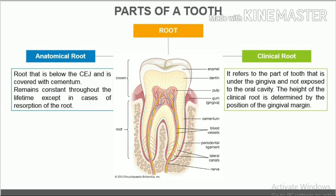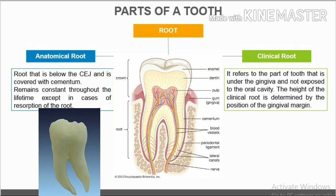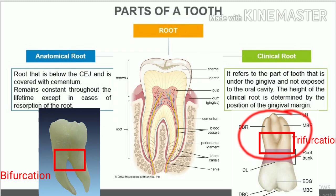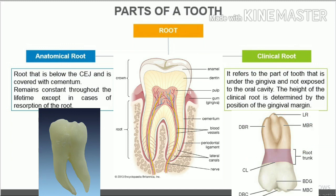Single roots are seen in anterior teeth, mandibular premolars, and maxillary second premolars. Multiple roots are seen in molars and premolars. In maxillary first premolars and mandibular molars, two roots are present, and in maxillary molars, three roots are present. Bifurcation or trifurcation is the term used for the division of the root into two or three segments.